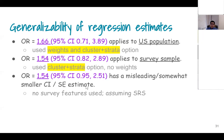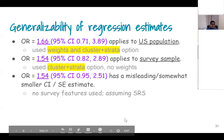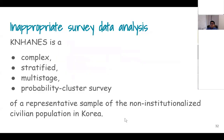To summarize: using weights, cluster, and strata together — the target population is the U.S. population and the confidence interval is correct. Using only strata and cluster without weights — the inference is about the sample and the confidence interval is still correct. Using nothing and assuming SRS — the point estimate is for your sample but the confidence interval is misleading because variance was not estimated properly.